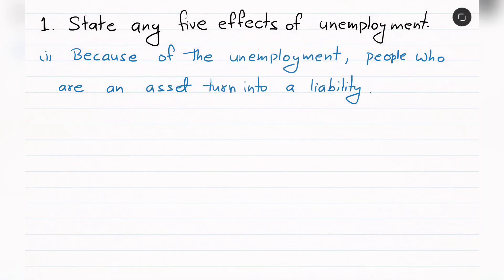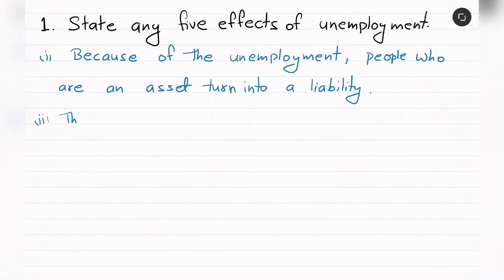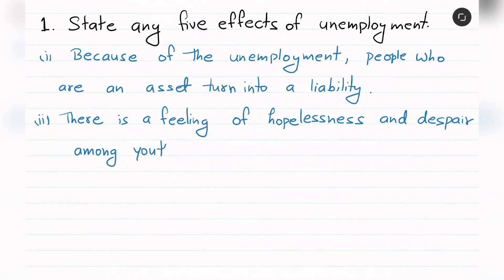Because of unemployment, people who are an asset are turned into a liability — yani ki unemployment ki karan jo log asset ban sakte hain woh ek liability ban kar rahe jate hain.